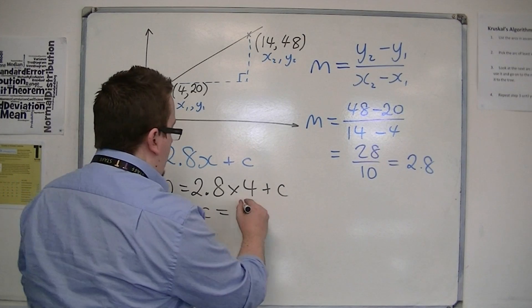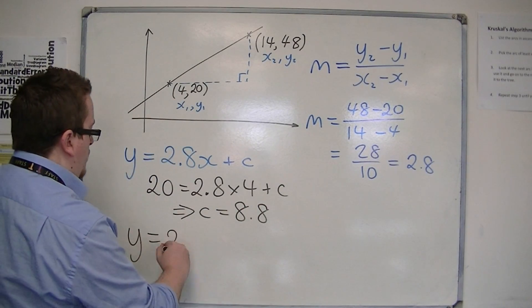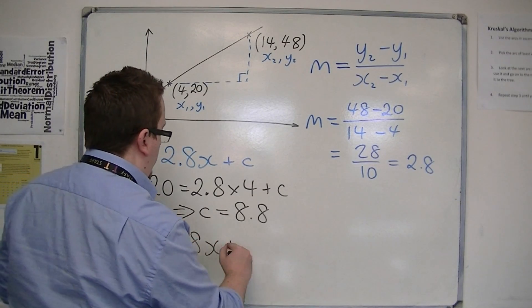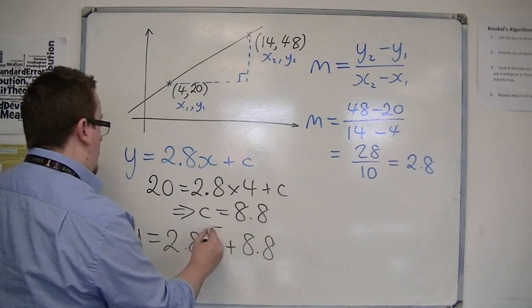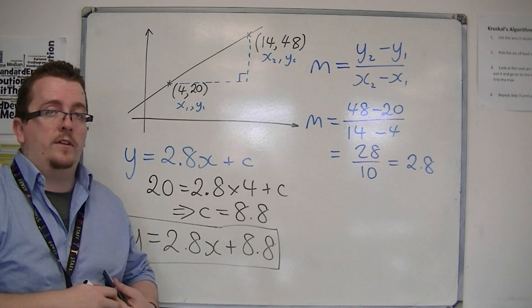So c is 8.8. Therefore, y is equal to 2.8x plus 8.8. That is the equation of the line that goes through those two points.